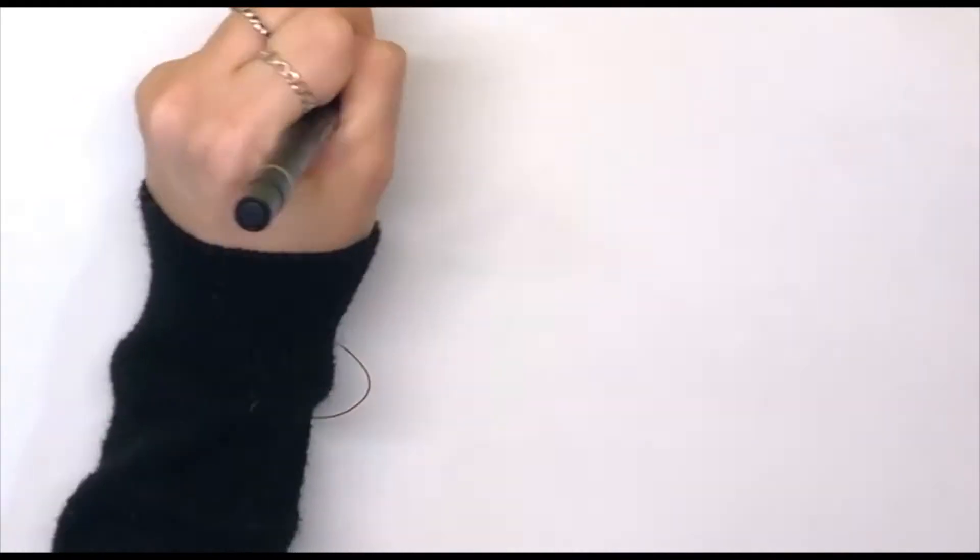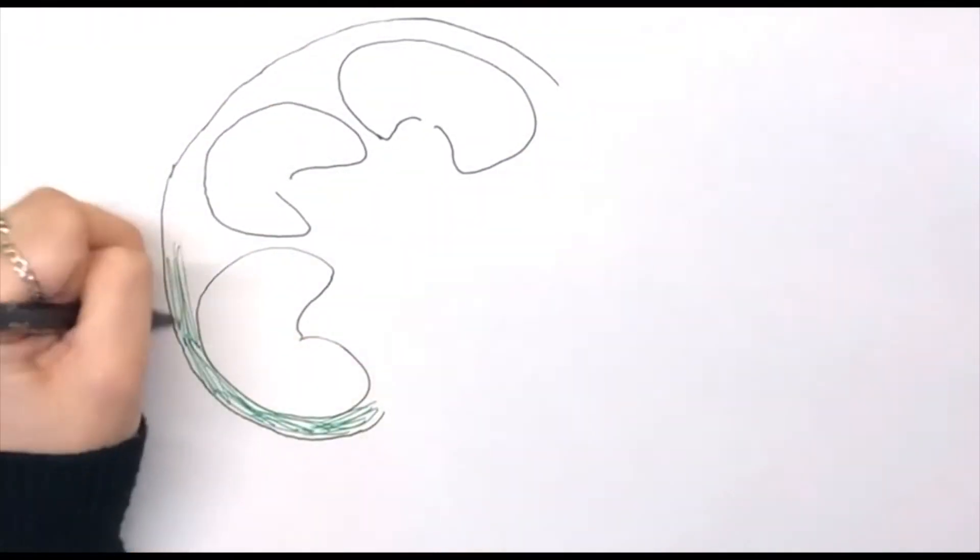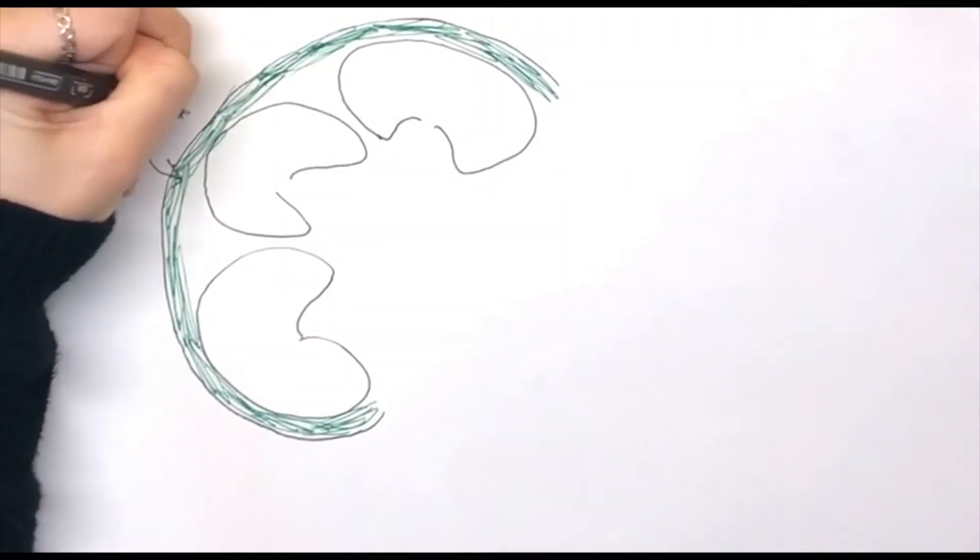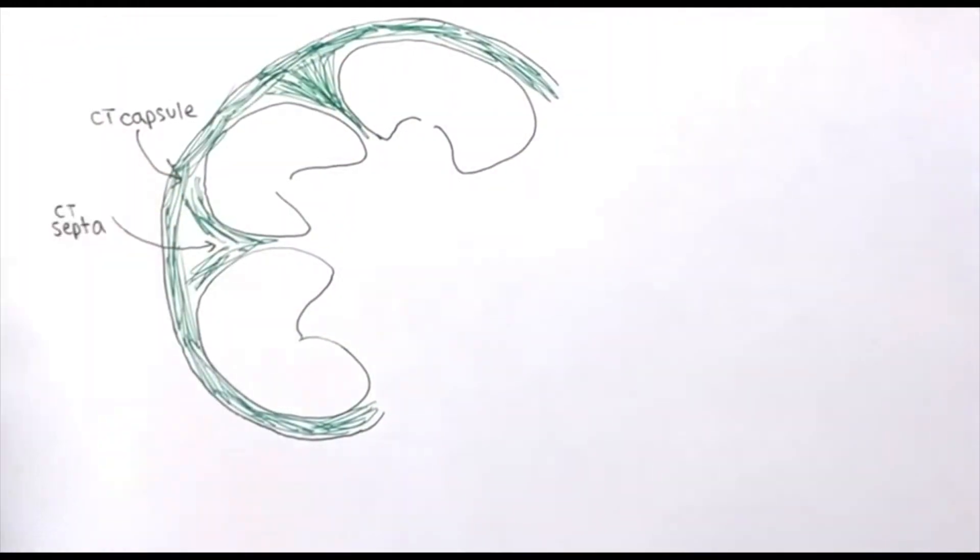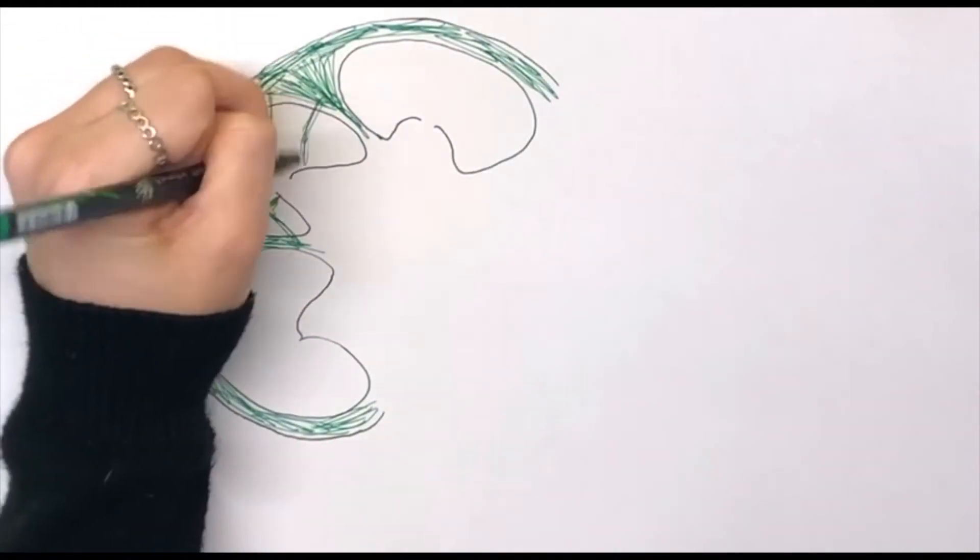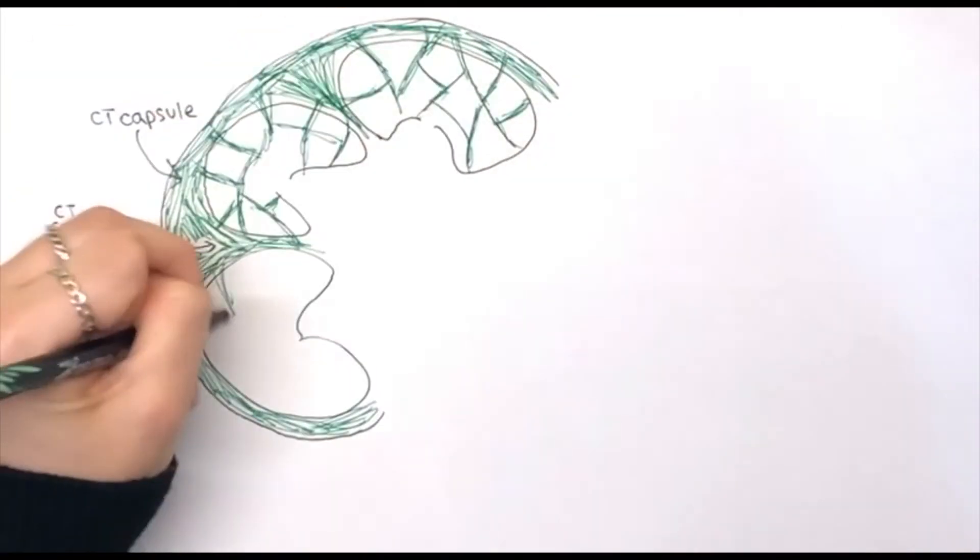The parenchyma of gland is organized in compartments through visible delimitations of connective tissue. Bigger units are called lobes made of smaller subunits named lobules.